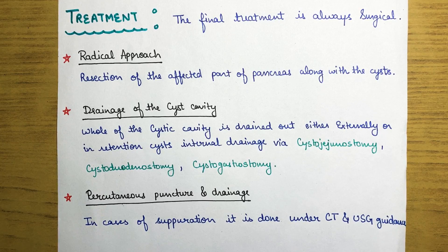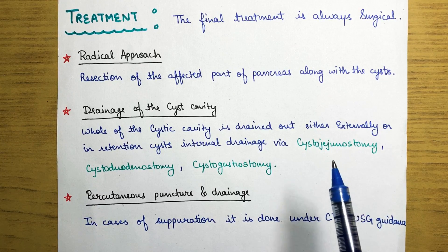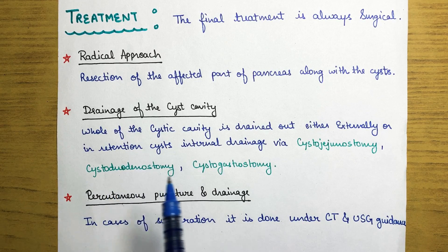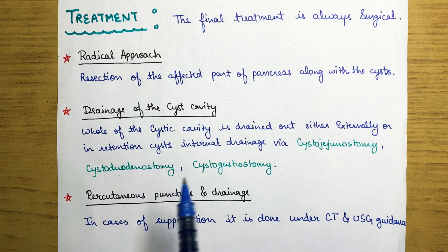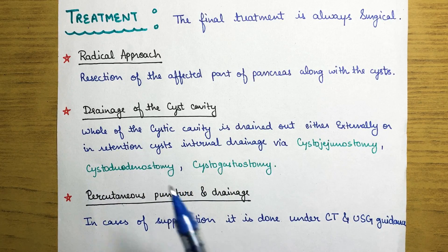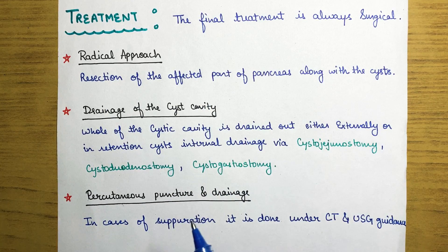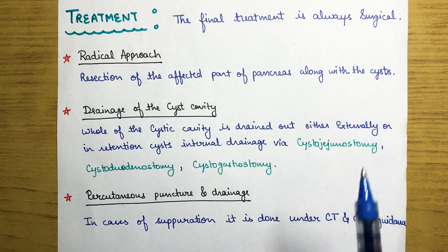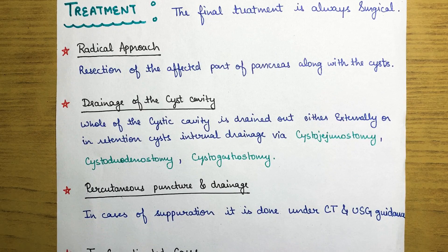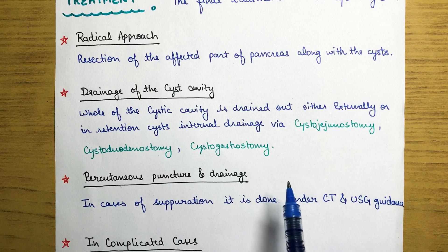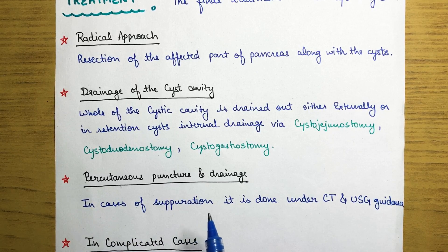Internal drainage procedures include cystojejunostomy — where the cyst is joined to the jejunum part of the small intestine — as well as cystoduodenostomy, where it is joined to the duodenum, and cystogastrostomy, where it is joined to the stomach. These allow the cyst to drain internally.